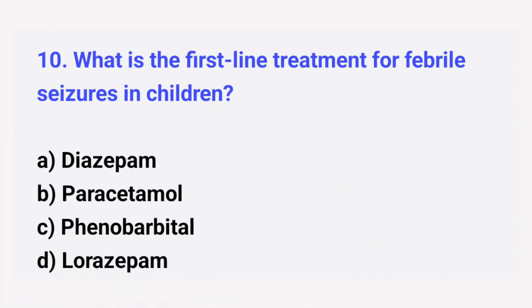Question number 10. What is the first line treatment for febrile seizures in children? The right answer is option A: Diazepam.